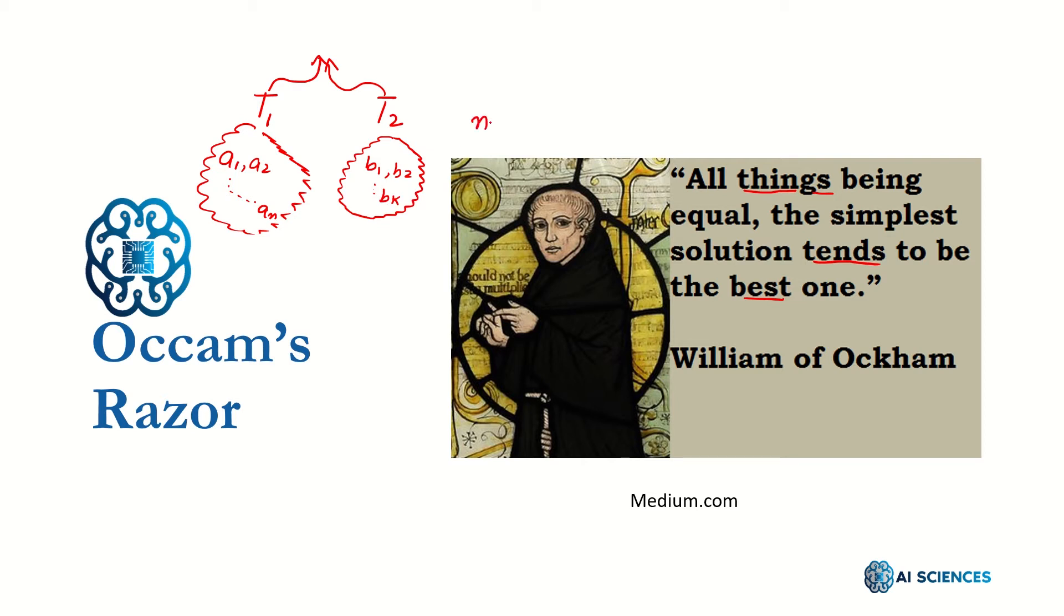If n is smaller than k, which means if theory one is explained by taking fewer assumptions as compared to theory two, and theory one and theory two both reflect the same meaning, both are consequently the same, then Occam's Razor principle suggests choose theory one. That's probably more correct, or in this particular case, it's the best one.